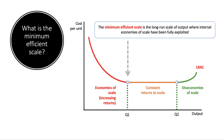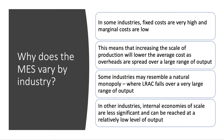Beyond the minimum efficient scale, there's of course the possibility of diseconomies of scale or decreasing returns to scale. Why does the MES vary by industry? It depends on the nature of production and the nature of supply to consumers. In some industries, the fixed costs are very high — the cost of setting up the plant, network, or business — but the marginal cost of selling to one extra consumer is low. This high ratio of fixed to marginal cost means increasing the scale of production reduces average cost, as overheads are spread over a much bigger range of output. We say some industries resemble a natural monopoly, where the average cost in the long run keeps falling over a very large range of production.